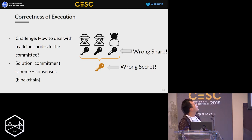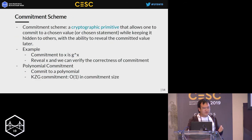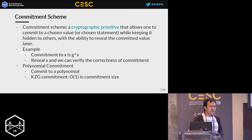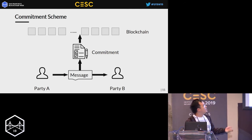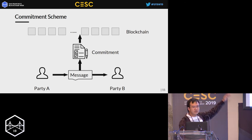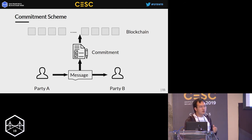Now let's look at how we deal with malicious parties in our committee. We choose to use a commitment scheme and the blockchain or any consensus protocol to solve this problem. A commitment scheme is a cryptographic primitive that allows somebody to commit to a value without revealing it, and you can always reveal it later and verify that the commitment is correct. Whenever a party wants to send a message to another party in the committee, it puts a commitment on the blockchain. Everyone in the committee can then verify properties of all the messages using the commitment — such as verifying all the messages sum to zero. Whenever a party receives a message it fetches the commitment from the blockchain and verifies correctness, ensuring the protocol proceeds correctly.